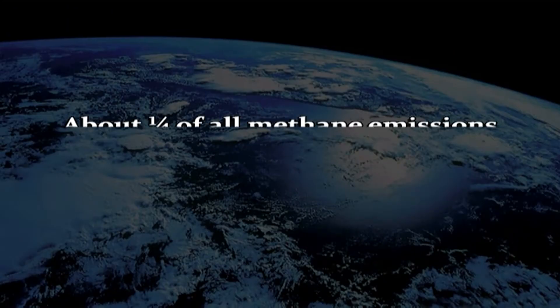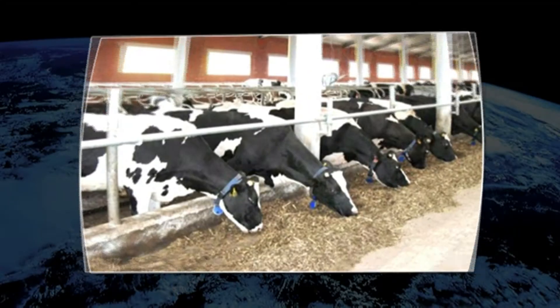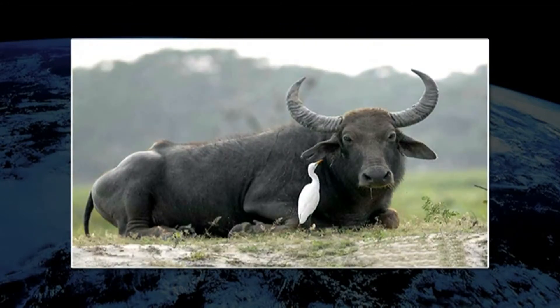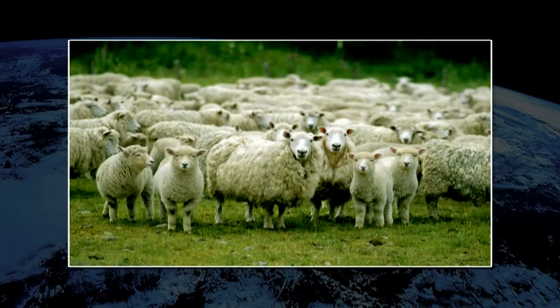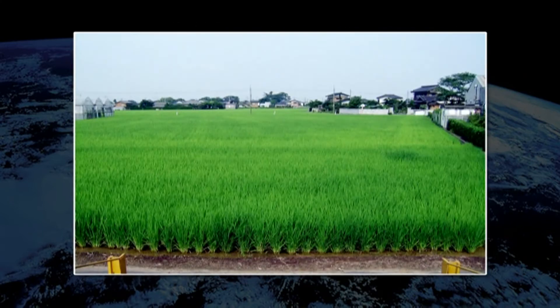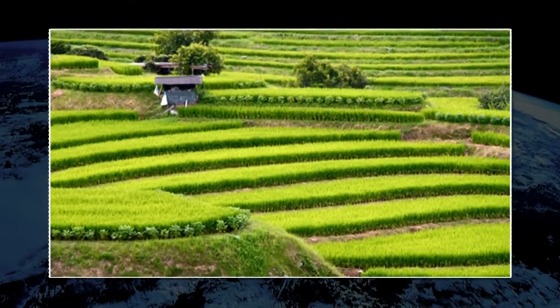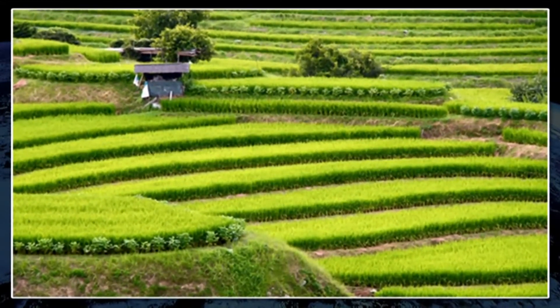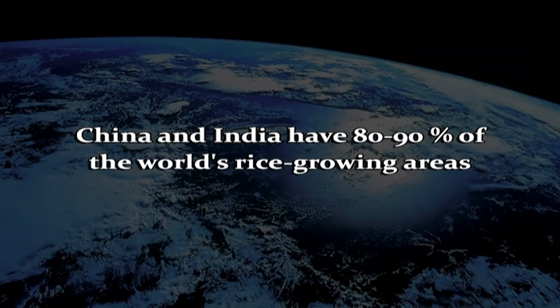Now methane — it is another important greenhouse gas in the atmosphere. About one-fourth of all methane emissions are said to come from domesticated animals such as dairy cows, goats, buffaloes, camels, horses and sheep. These animals produce methane during the cud-driven process. Methane is also released from rice or paddy fields that are flooded during the sowing and manuring periods. Nearly 90% of the paddy growing area in the world is found in Asia, as rice is the staple food there. China and India, between them, have 80–90% of the world's rice growing areas.